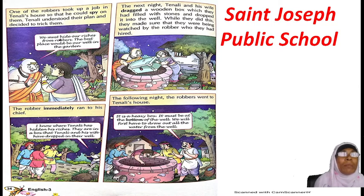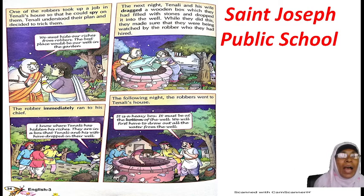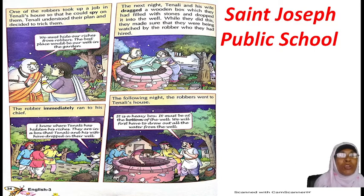See the conversation: 'We must hide our riches from robbers. The best place would be a well in the garden.' Tenali is talking to his wife — you can see the picture over here — and he is keeping his voice louder so that the person who has come to work in his house can hear what he is saying, giving a hint to the robber that they are going to keep their riches in the well.